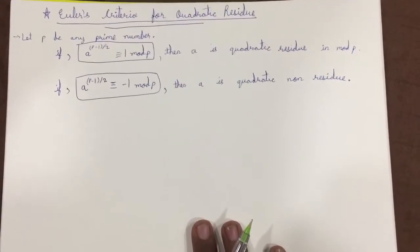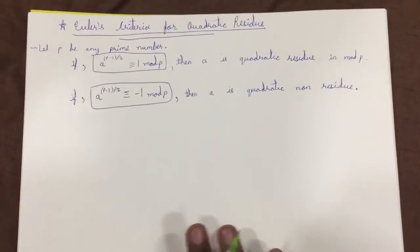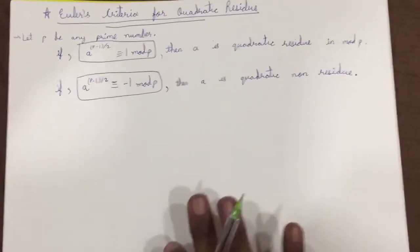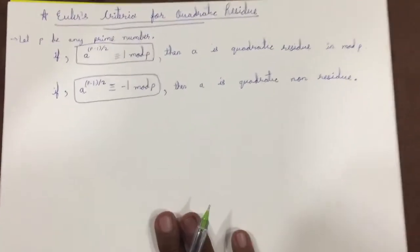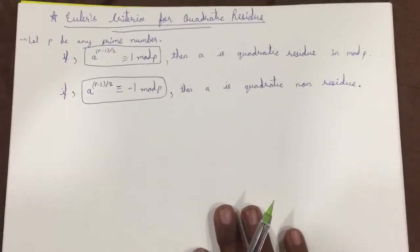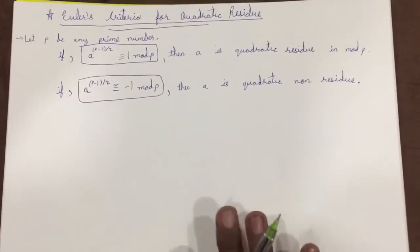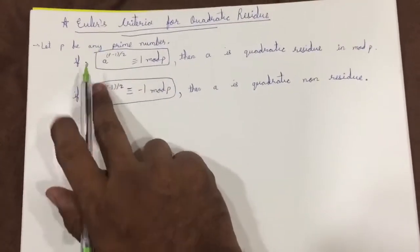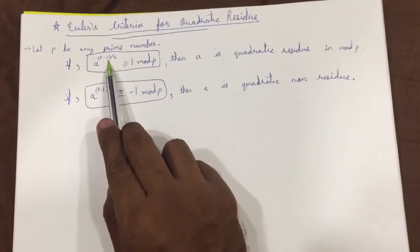For any quadratic residue method it will always be applied for prime numbers only, rather be it that common quadratic residue method or this Euler's criteria method. It will always be applied for prime numbers only.